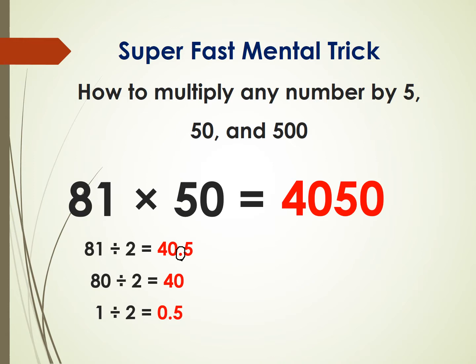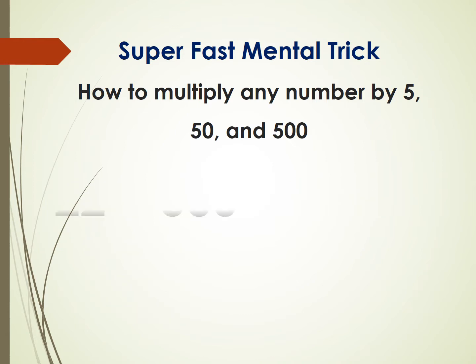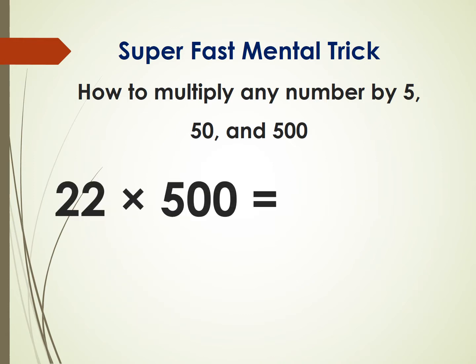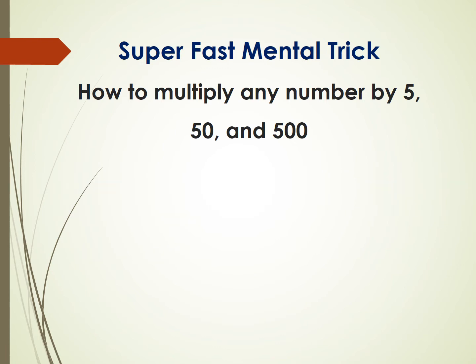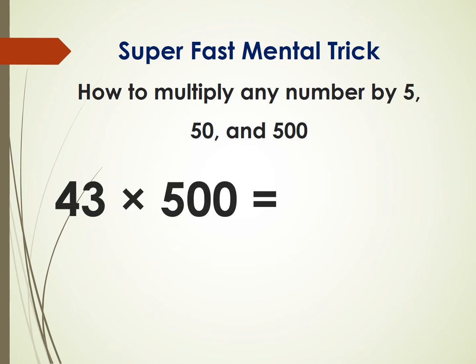Next example: 22 times 500. Just divide 22 by 2, you get 11. Now just put three zeros after it — the answer is 11,000.